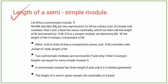When ℓ(M) is finite, M has a composition series, and ℓ(M) coincides with Jordan-Hölder length of M. Two semi-simple modules are isomorphic if and only if their S-isotypic lengths are equal for every simple module S. A semi-simple module has finite length if and only if it is finitely generated. The length of a vector space equals the cardinality of a base. Thank you.